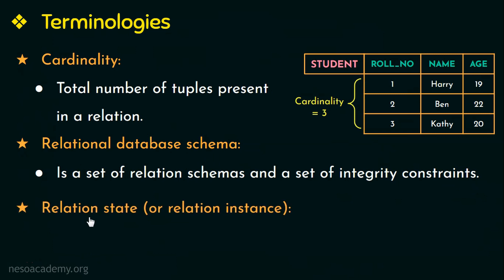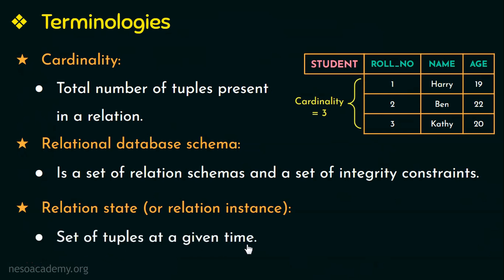Next, what do you mean by a relation state or relational database instance? A relation instance or relation state is a set of tuples at a given moment of time. For example, say at time t1, this is the set of tuples at that given time — this is the relation state or relation instance. Suppose I am updating this relation by deleting the third row, then the set of tuples, say at time t2, would be only these two rows — that would be the relation instance or relation state at that given time.